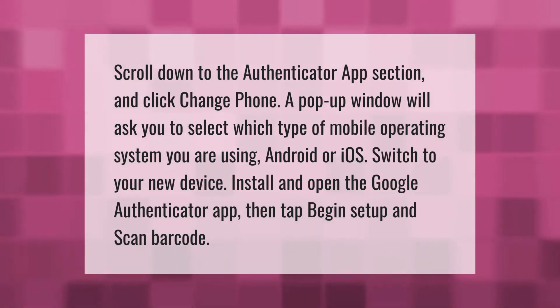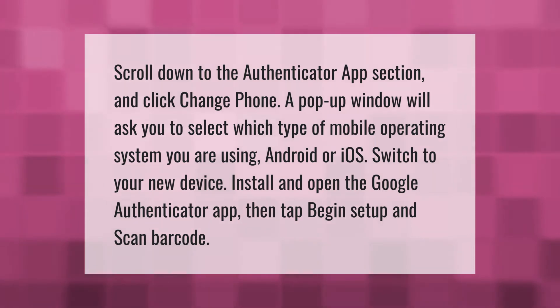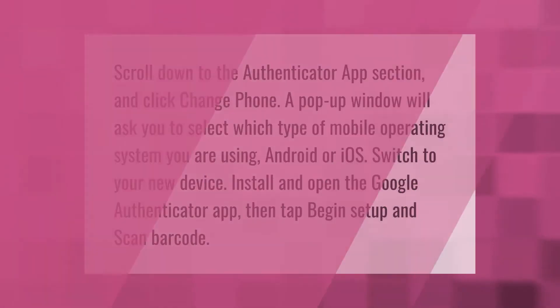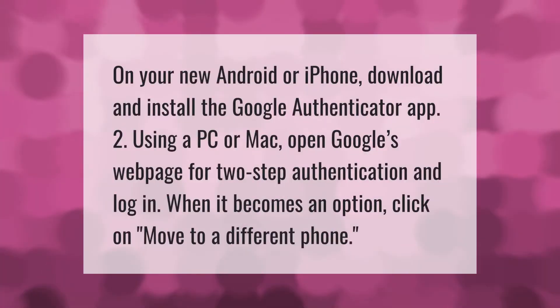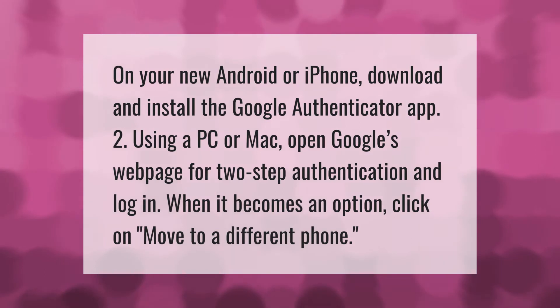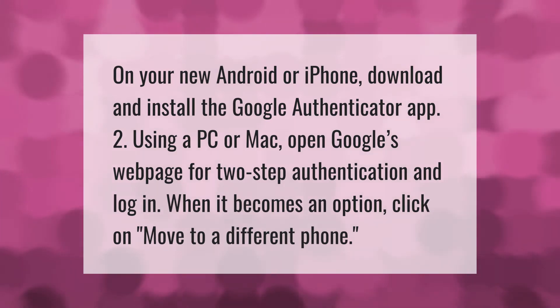Switch to your new device. Install and open the Google Authenticator app, then tap Begin Setup and scan the barcode. On your new Android or iPhone, download and install the Google Authenticator app.